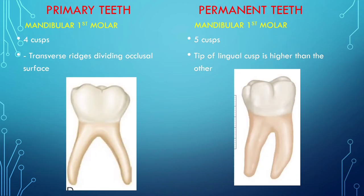The mandibular first molar in primary dentition has four cusps, while the mandibular first molar in permanent dentition has five cusps. There are transverse ridges dividing the occlusal surface in primary, and the tip of the lingual cusp is higher than the others in the mandibular first molar of permanent dentition.